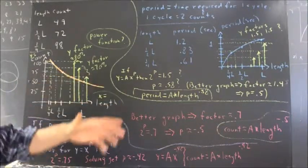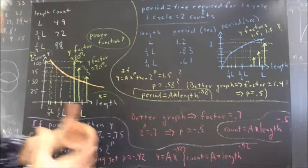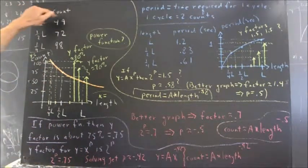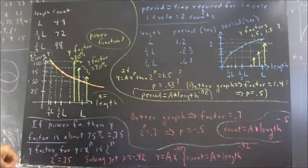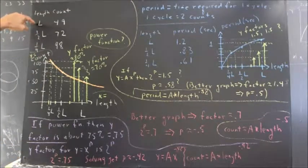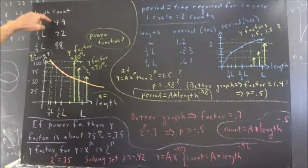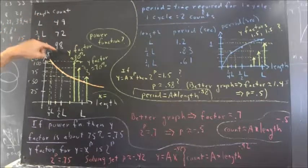Brief summary of what we just did, and we did this on-screen. You can look at the on-screen process of counting the pendulum, but we got for lengths L, half L, and quarter L: 49, 72, and 98 counts.